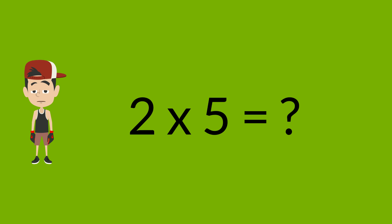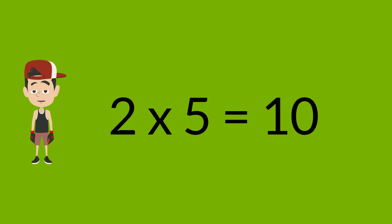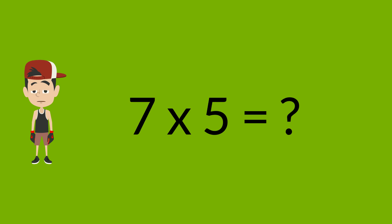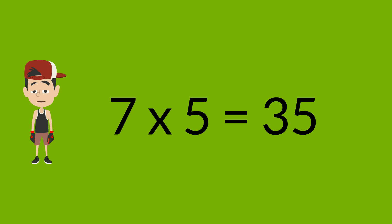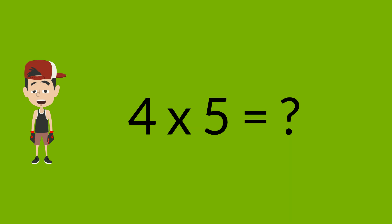2 times 5 is? 2 times 5 is 10. 7 times 5 is? 7 times 5 is 35.